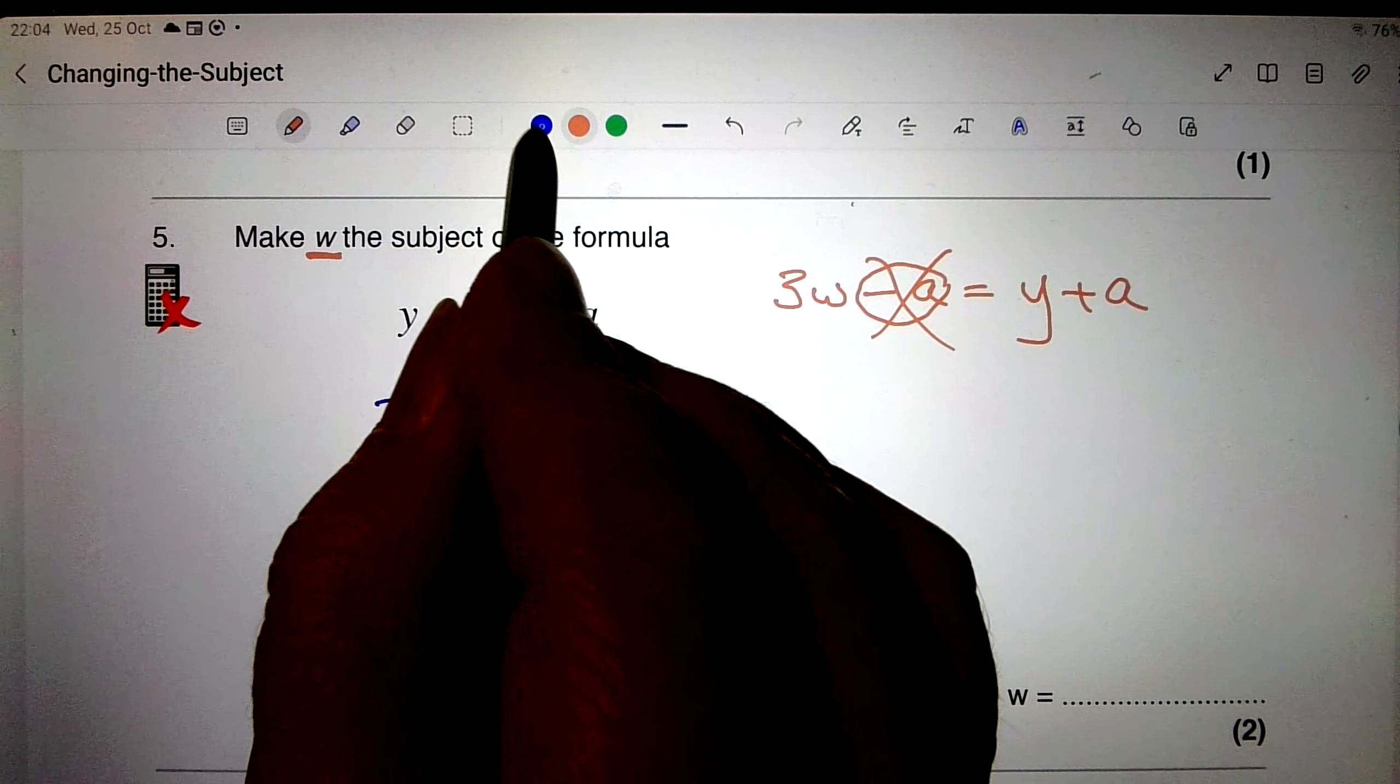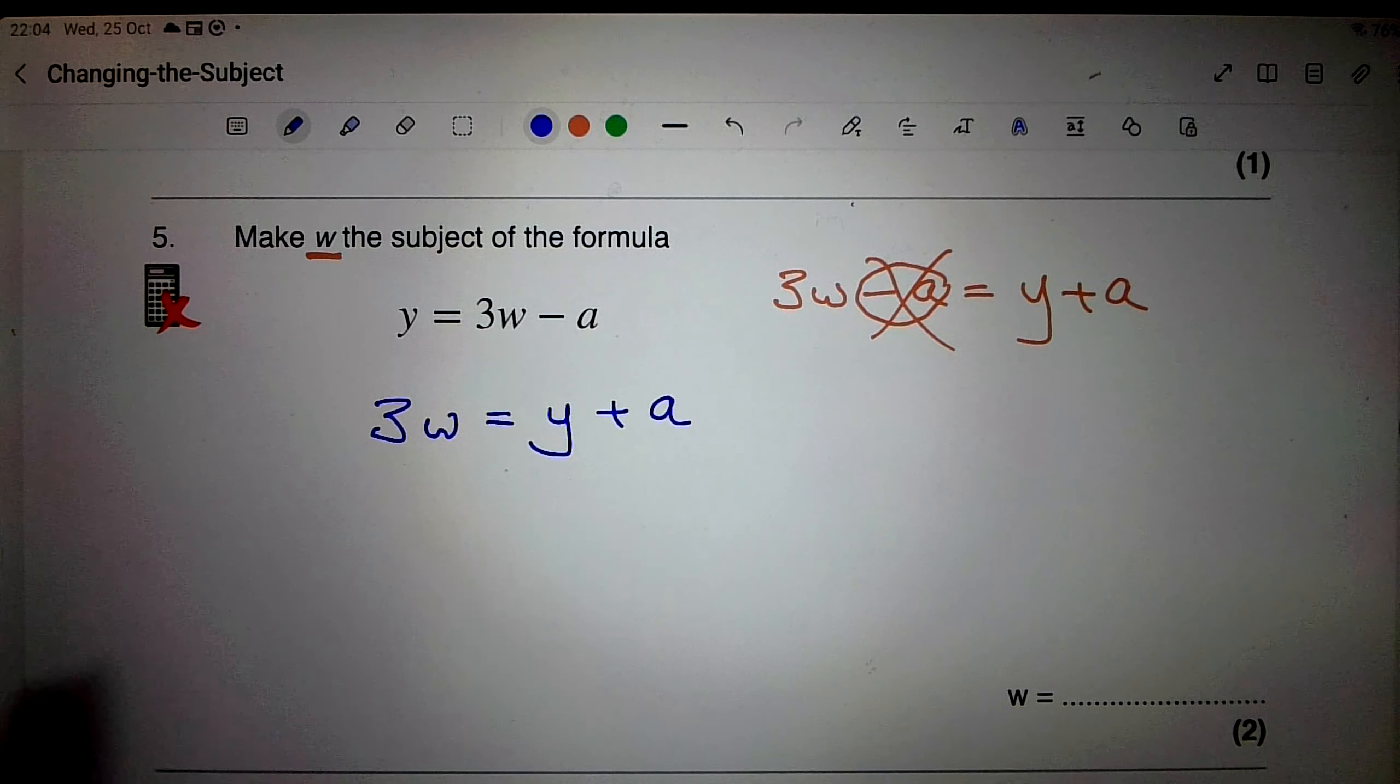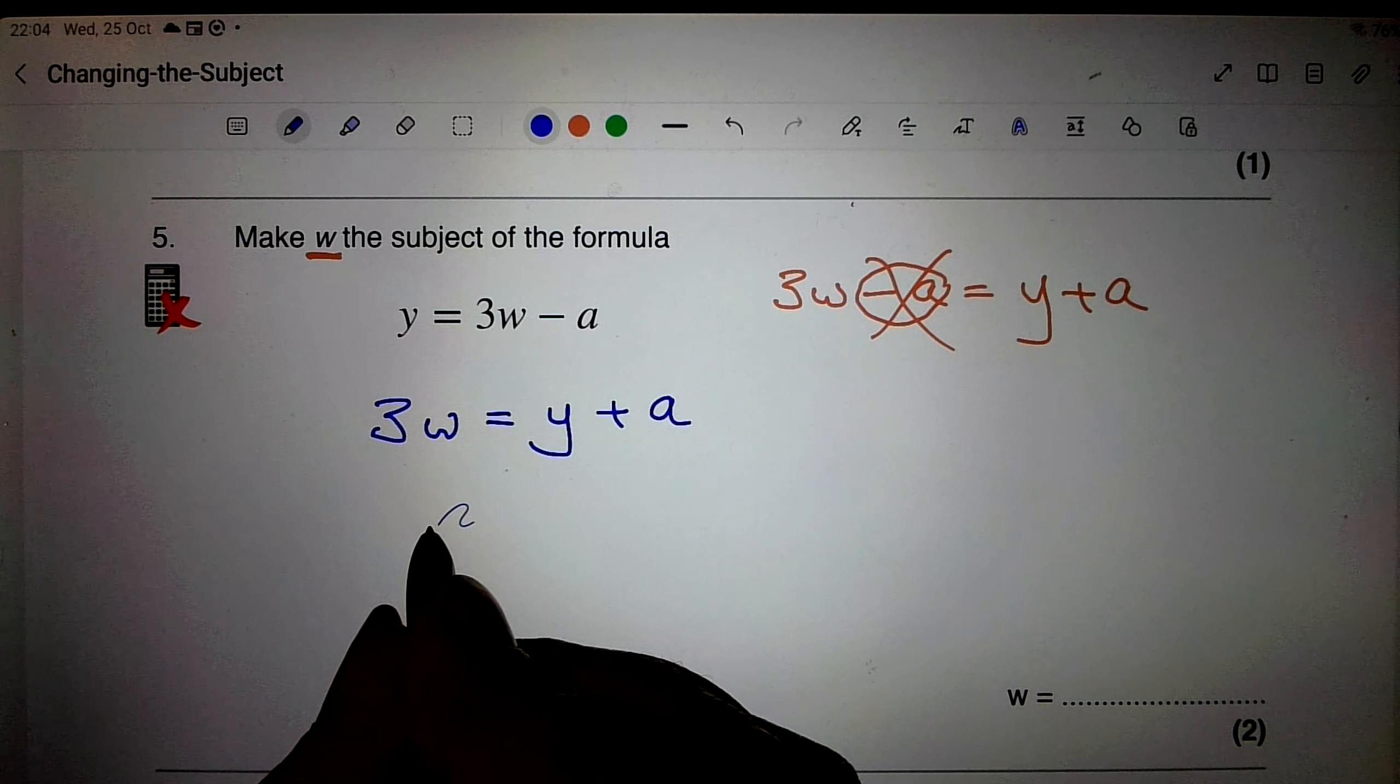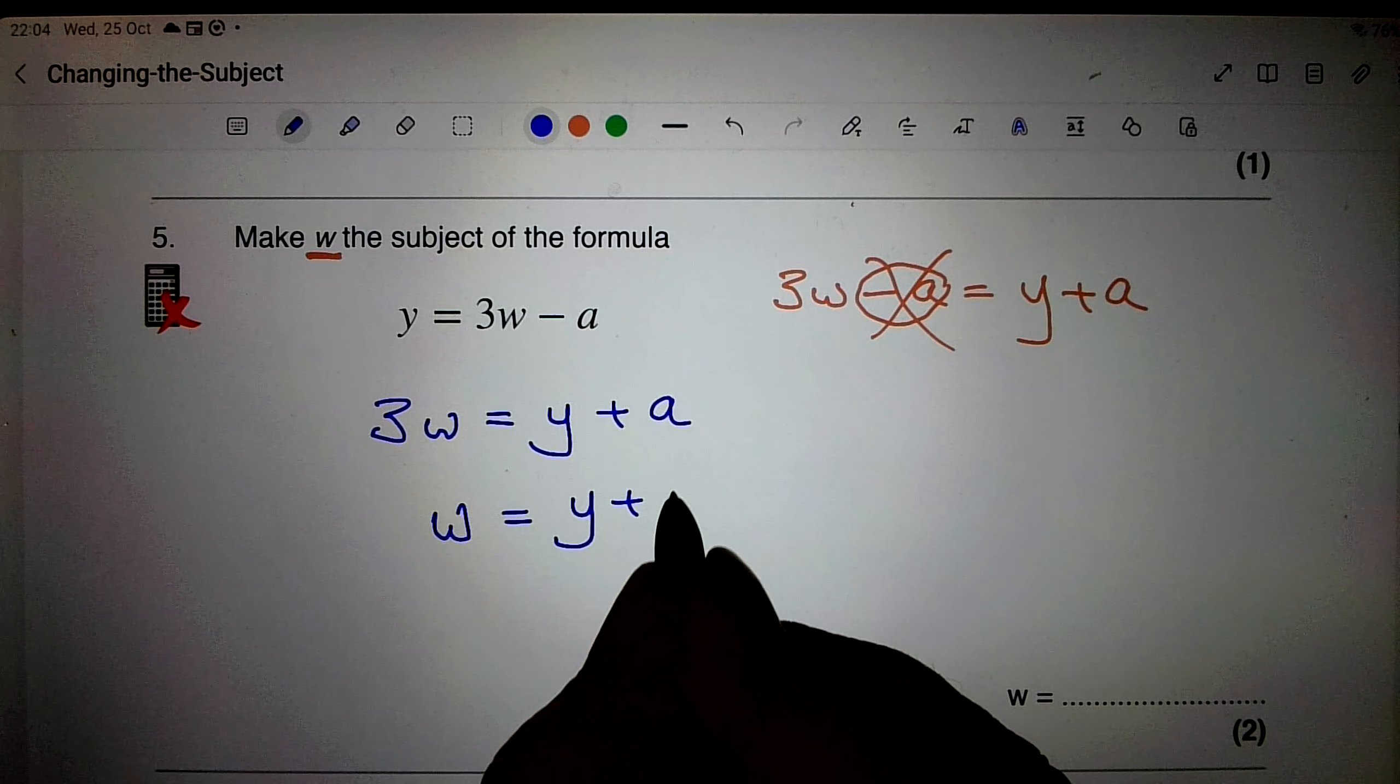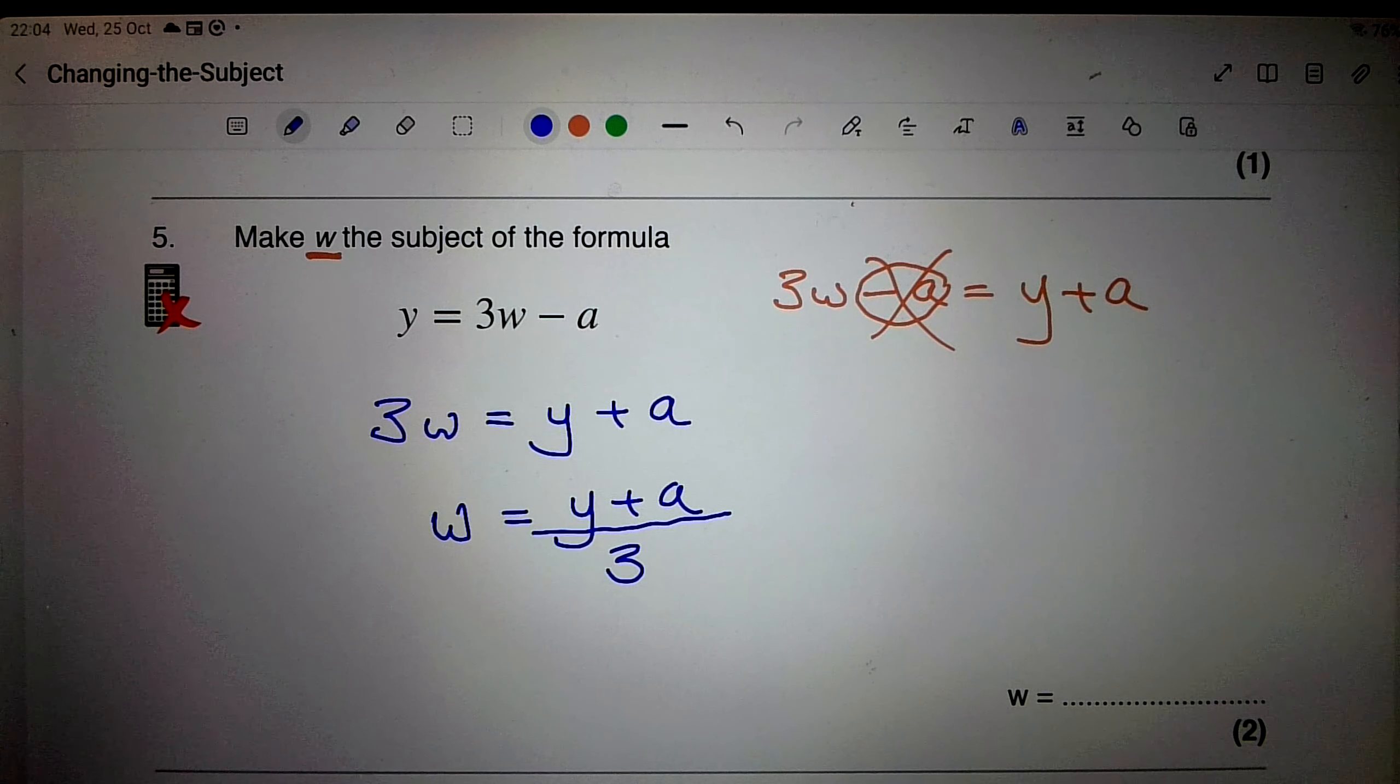Right, my next step is to get rid of this three. Now on this side it's multiplying, so when I take it to the other side, it's got to divide, and it's got to divide everything. So I finish up with w equals y plus a, all of that lot divided by three. And there's my answer.